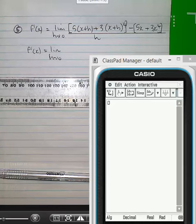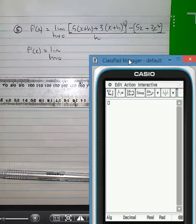Now question five by first principles is pretty darn messy. It makes a bit of sense in this instance to make use of our graphics calculator.